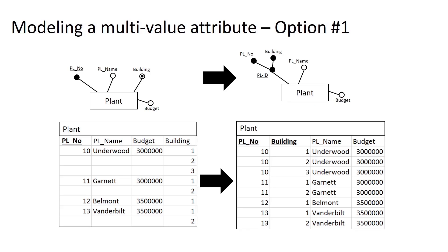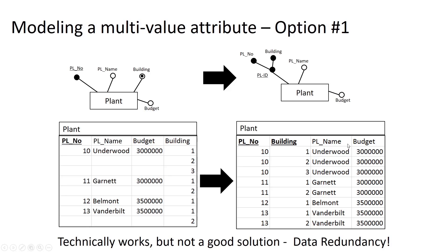There are a couple of approaches we could take to resolve this issue. One, we could make plant ID a composite ID that contains both the plant number and the building. This resolves the issue of not having values for the required attribute, but then we wind up introducing another problem in that we now have data redundancy — the same plant name and the same budget repeated multiple times for the same plant, plant 10 in this case.